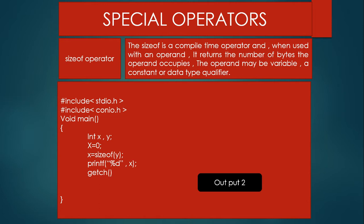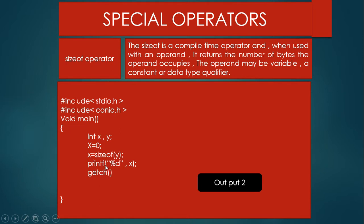I am taking a simple example, declaring two variables X and Y and assigning zero to X. Then I write X = sizeof(Y), and since the data type of Y is int, the size of int is 2 bytes. This size is assigned to variable X, and when we print the value of X the output is 2.